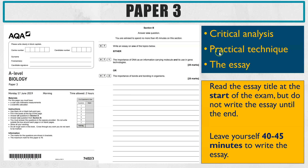For paper 3, I'd suggest going straight to the back and reading the two essay titles first. Don't make a decision yet on which one you'll write — just read through. Then go back to the beginning and answer all the other questions. The reason to do it this way is that once you've read the titles, you'll subconsciously be considering them and potential topics as you work through the paper. By the time you get to the end, your planning and writing will be much more efficient, and you may also pick up ideas for your essay along the way.